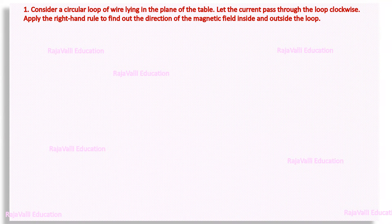Hello friends, welcome to Rajavali education channel. Here we are going to see one of the in-text questions taken from 10th NCERT Science, chapter number 12, Magnetic Effects of Electric Current, page number 201. The question number is 1.